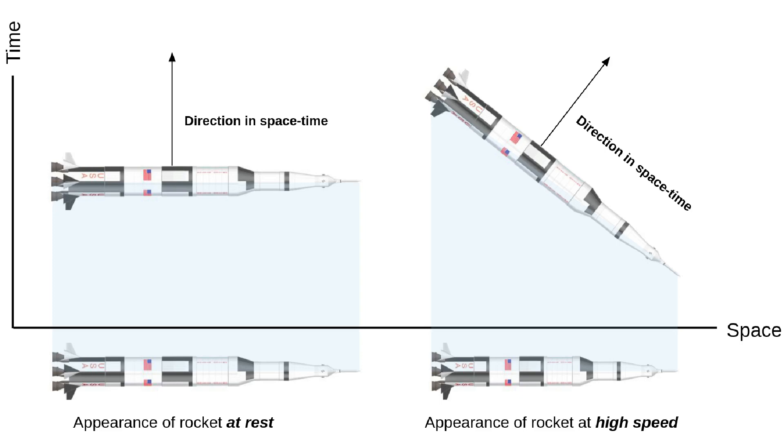A rocket at rest, like the horizontal pencil, uses its entire length to reach through space and none of its length to reach through time. An accelerated rocket, on the other hand, has a different direction through space-time. It is rotated and only uses some of its proper length to reach across space.